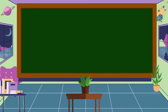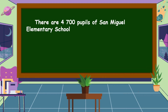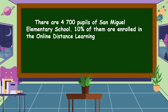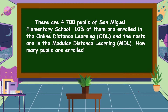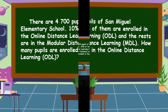Our first problem is an example of a routine problem. There are 4,700 pupils of San Miguel Elementary School. Ten percent of them are enrolled in the online distance learning or ODL, and the rest are in the modular distance learning or MDL. How many pupils are enrolled in the online distance learning or ODL?